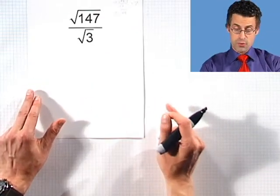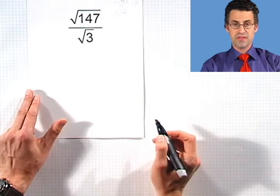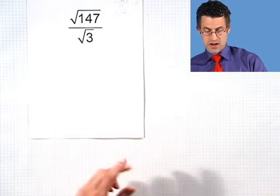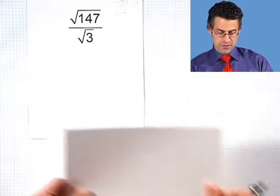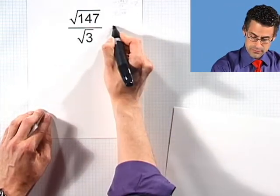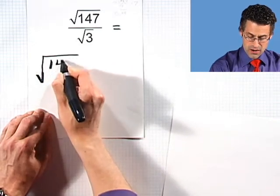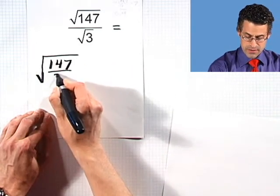All right, let's take a look at the square root of 147 divided by the square root of 3. Again, this looks really complicated. I want us to look at this now in two different ways. The first way is